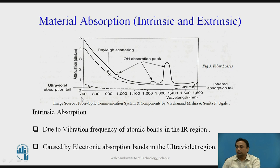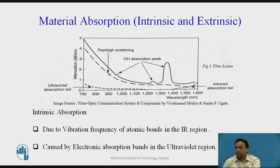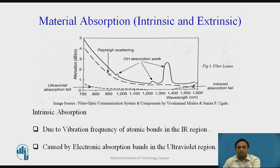The wavelength of operation ranges from 700 nm to 1600 nm, falling between two intrinsic absorption regions: the ultraviolet region and the infrared region. In the ultraviolet region, absorption is caused by electronic absorption bands — specifically when photons interact with electrons that get excited to higher energy levels. In the infrared region, the main cause of intrinsic absorption is the vibration frequency of atomic bonds in silica glass, particularly Si-O bonds interacting with the electromagnetic field of the optical signal, transferring light energy from the field to the bond.